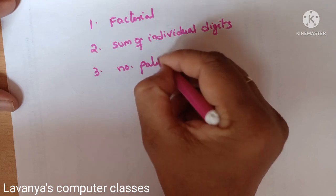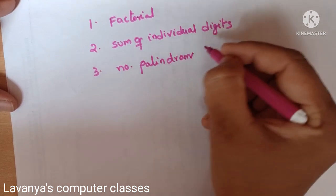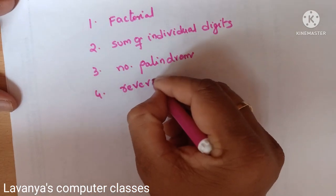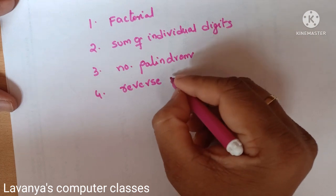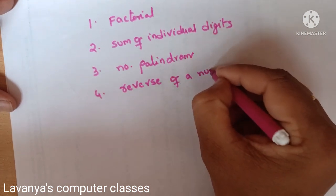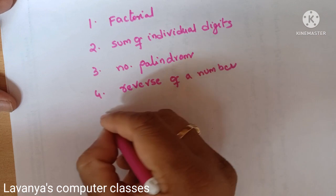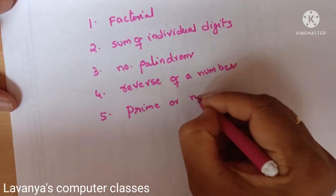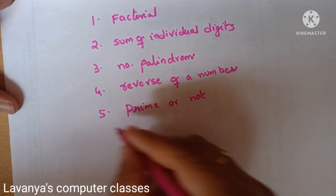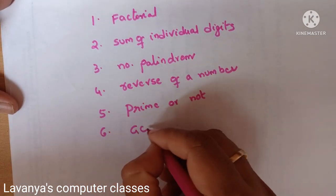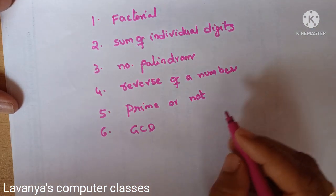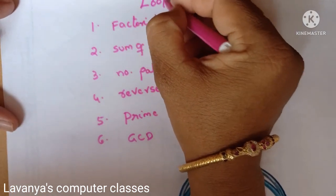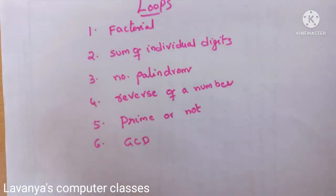The next program is number palindrome — take any number and find out if it is a palindrome or not. Next is reverse of a given number: take any number like 123 and print it in reverse order. Next, a very important program is prime or not — take any number, find out if it is prime, and also generate the prime series. Next is GCD, greatest common divisor. These are all the important programs in loops concepts.